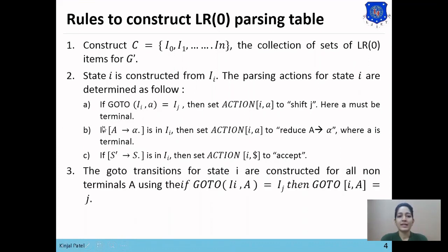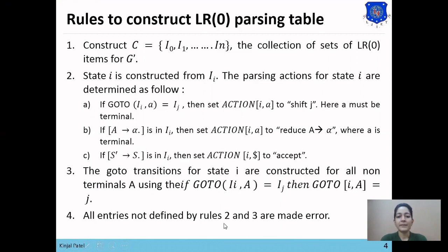The third rule is for non-terminals. If goto(Ii, A) equals Ij, then set goto[I, A] equals J. For non-terminal symbols, we only add J to the goto column of I on A. The fourth rule is that all entries not defined by rules 2 and 3 are marked as error. In summary: for shift, if A is a terminal symbol place SJ; if A is non-terminal place J only. For reduce, place R in all terminal symbol columns.